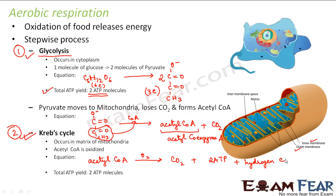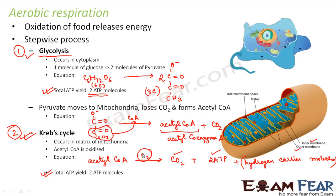The hydrogen carrier molecules produced are NADH and FADH2 — molecules carrying high-energy hydrogen atoms. We will not go into detail of these molecules at this level. In your higher classes, you will learn these equations in more detail. For now, acetyl coenzyme A in presence of oxygen gives 2 ATP molecules, carbon dioxide, and hydrogen carrier molecules. So in glycolysis 2 ATP molecules were produced, and again in the Krebs cycle 2 ATP molecules are produced. Oxygen is needed in this step, which is why it is aerobic respiration.